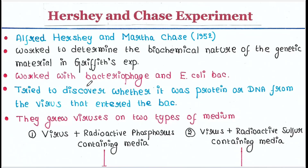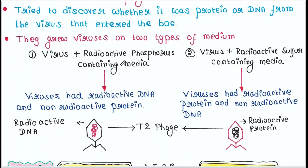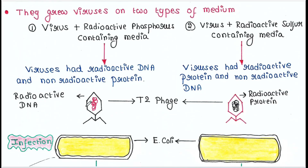They worked with a virus — bacteriophage T2 — and E. coli bacteria, and tried to discover whether it was protein or DNA from the virus that entered the bacteria. To perform the experiment, they grew viruses on two types of medium. In the first set, they grew viruses on a radioactive phosphorus-containing medium, so all the viruses had radioactive DNA and non-radioactive protein, since phosphorus is a constituent of DNA.